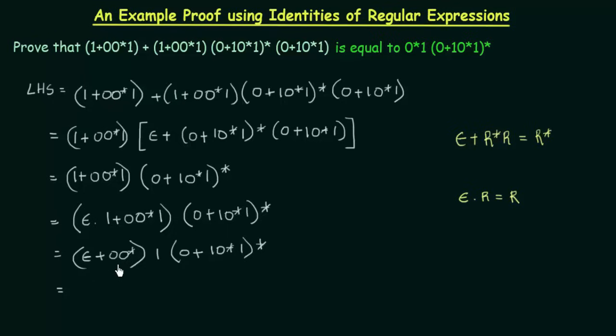Instead of this, I can just write this as 0*. Because R is 0 over here, and we see we get R* here. So we will get 0* over here. And this one is as it is. And this term also as it is: (0+10*1)*.